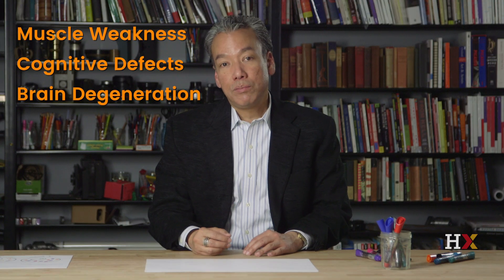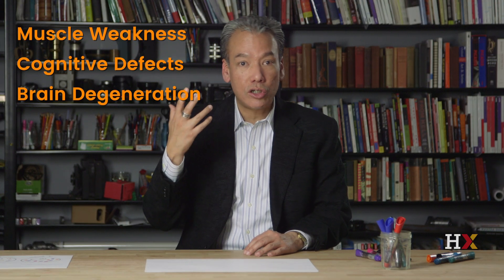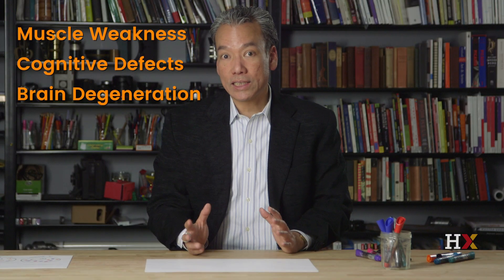Mitochondrial diseases are really quite devastating. Given the role that mitochondria play in providing the majority of ATP that we need, any disease that disrupts their ability to produce ATP can have significant metabolic impacts. Mitochondrial disease often involves muscle weakness and wasting, because muscles use a significant amount of ATP. It can also involve cognitive defects and degeneration of the brain, because neurons and nerve cells also utilize an enormous amount of ATP.